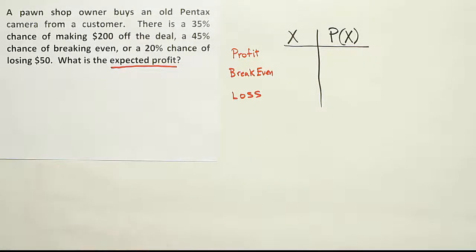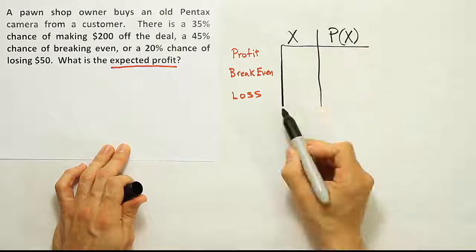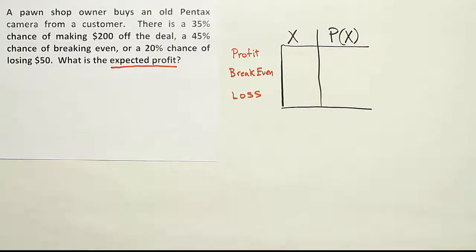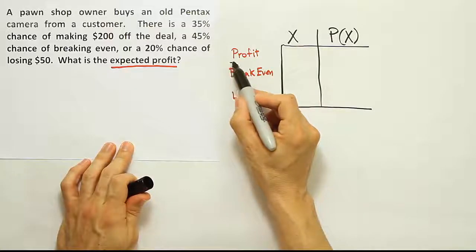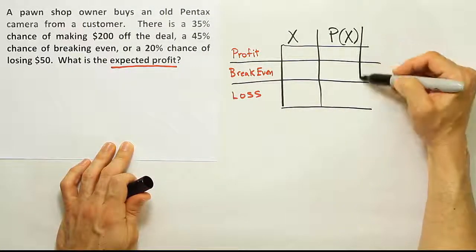This will give me my three controlling events, right? That'll control how much money is paid out based on what's described in the problem. So let's make three rows first.